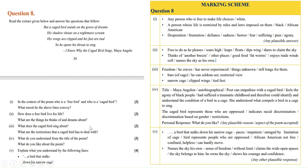How does a free bird live his life? What are the things he thinks of and dreams about? Free bird is living his life freely. He is free to do whatever he pleases. He soars high, he leaps and floats and dips his wings and dares to claim the sky. What does he think of and dream about? He thinks of another breeze, meaning the free bird is not satisfied with what he has and wants more.